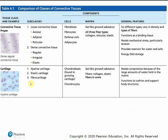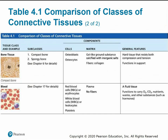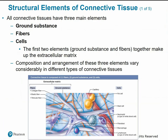Ground substance is the background material suspending everything together. Different fiber types dictate tissue function: collagen fibers resist forces and have high tensile strength, elastic fibers allow tissue to stretch and recoil, and reticular fibers form the scaffolding or structural component of most tissues. Cells found in connective tissues include fat or adipose cells, mast cells that release histamine and assist in the inflammatory response, neutrophils, fibroblasts, macrophages that eat pathogens, and lymphocytes.